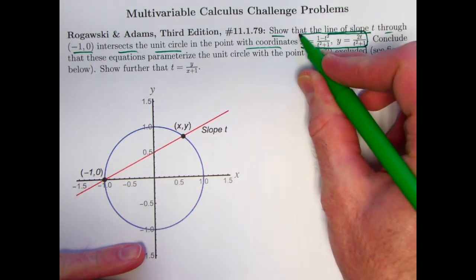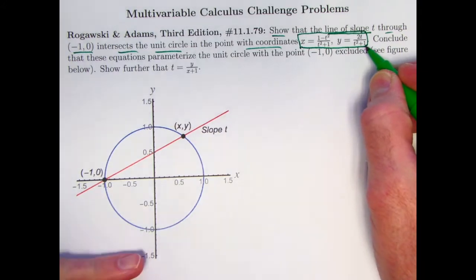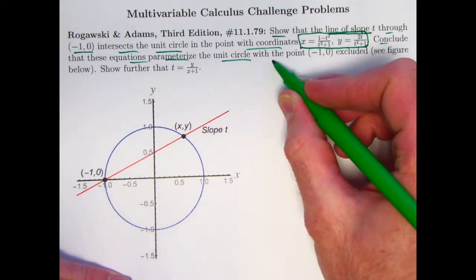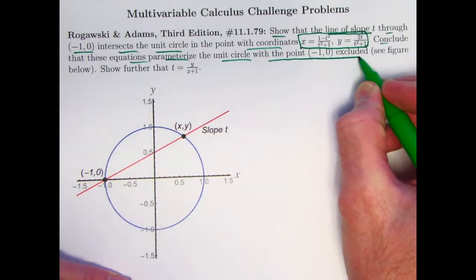The intersection occurs at a point whose coordinates are functions of the slope t. Might have been better to call the slope m, that's what most people are used to, but we'll go ahead and call it t like the problem tells you to.